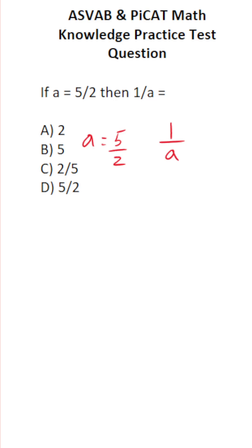Well, what are we going to do? We're going to take 5 over 2 and plug it in for A. This becomes 1 over 5 over 2.